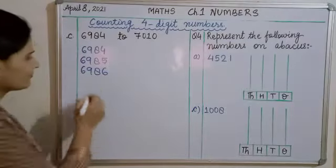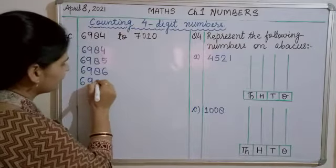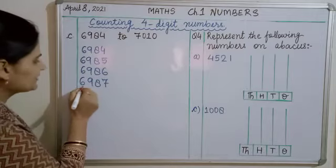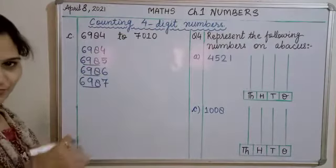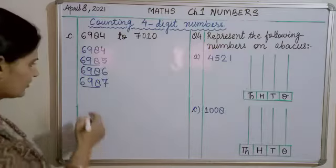Five ke baad six ho gaya hai. Six thousand nine hundred eighty seven. Six ke baad seven. Ye baqi sari three digits same hai. Okay? Tho aise hi hum karte chayeghe aur count ho sa chayega.